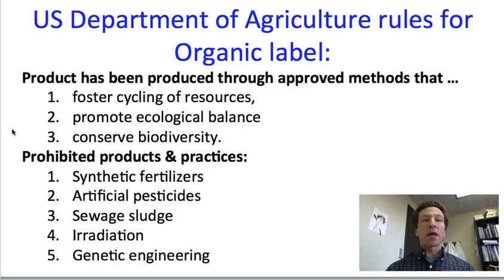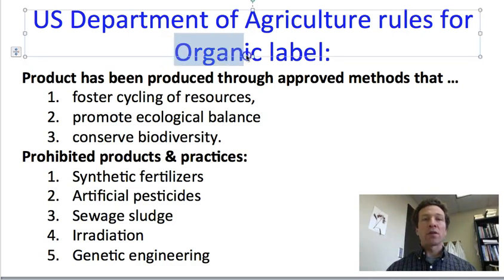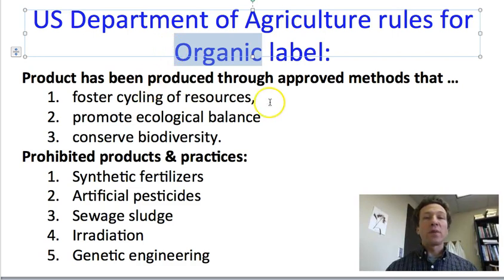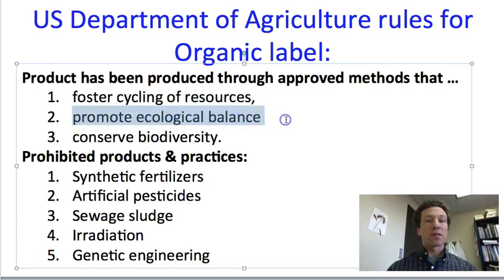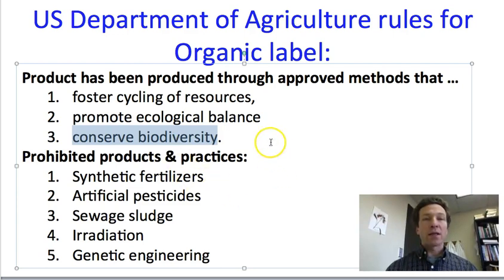In the United States, a seller can only use the term organic if they have organic certification from the USDA. In practice, private companies do the certification, but they have to do it according to USDA rules. To be certified as USDA organic, the product has to be produced through approved methods that foster the cycling of resources, promote ecological balance, and conserve biodiversity. In practice, those are fairly amorphous, so the certification is really about avoiding prohibited products and practices.